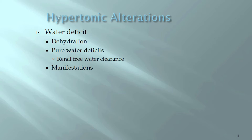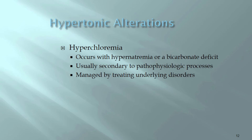The second condition is called diabetes insipidus, which has absolutely nothing to do with blood glucose concentration or the pancreas. Don't confuse it with diabetes mellitus — this is a common exam question asking students to distinguish between diabetes insipidus and diabetes mellitus.